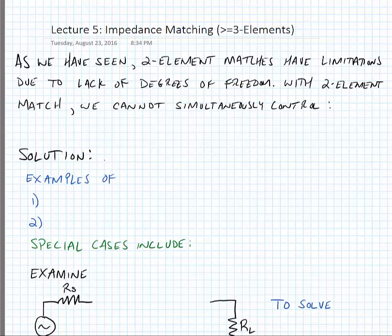In this lecture we're going to start investigating how we improve our matching networks. We saw that there were limitations with two element matching networks, and so now we're going to see what happens when we start to add more elements, for instance three elements.